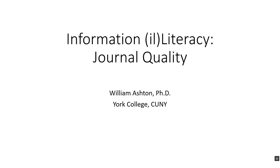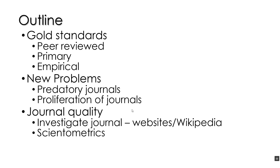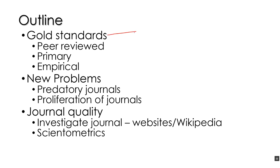Welcome everybody. Let's talk about information illiteracy, part two or three depending on which class you're in. This lecture is about journal quality. The outline of what we're going to be talking about today is going to mention the gold standards that hopefully you know already, then talk about new problems with identifying journals and the quality of journals, and then solutions to some of these problems. This is an extension of the original PsychInfo recorded lecture about peer-reviewed, primary, and empirical.